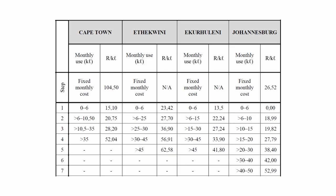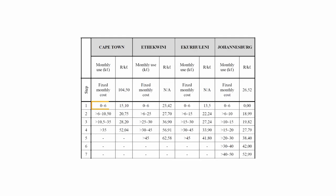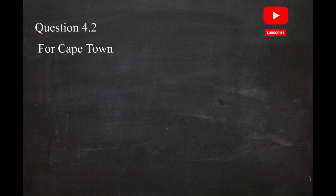The process for calculating the total water consumption of 45 kilolitres in Cape Town is as follows. In step one, the range is zero to six kilolitres, with a maximum of six kilolitres. The tariff is R15.10 per kilolitre. So the cost for step one is 6 kilolitres × R15.10 = R90.60.